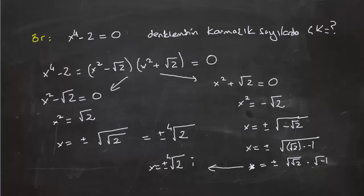Yani x = ±⁴√2 · i. Şimdi isterseniz bu kökleri de gösterelim. Bütün kökler dördüncü dereceden kök iki şeklinde yazılıyor.